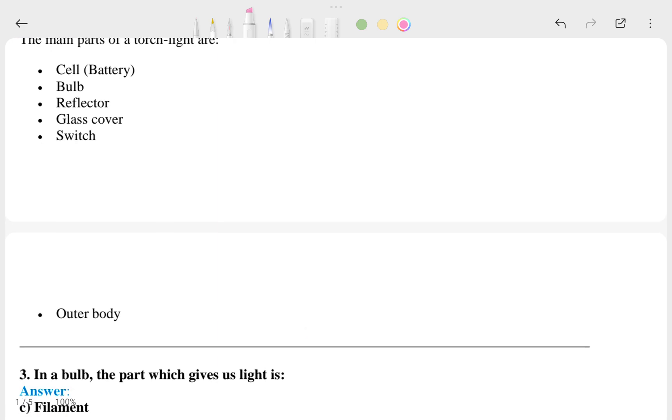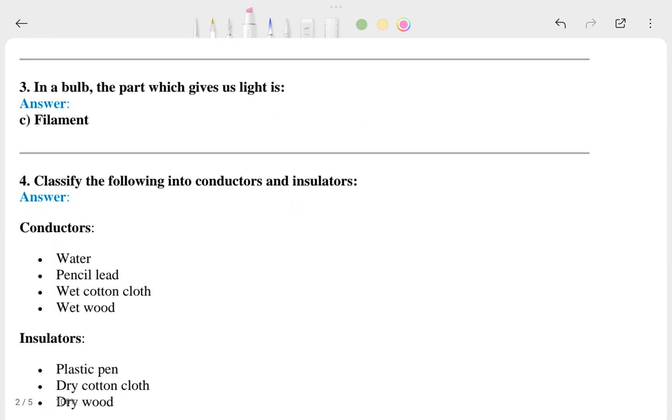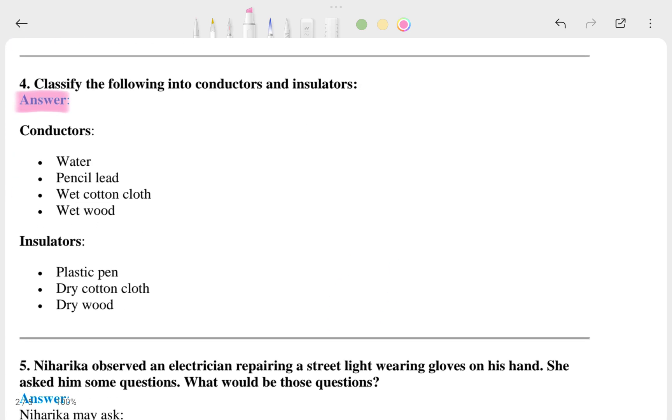Then let's talk about this one. In a bulb, the part which gives us light is - what is this? Is it filament or whatever? The answer is the filament. Classify the following into conductors and insulators. This is the answer - this is the conductor, this is insulator.